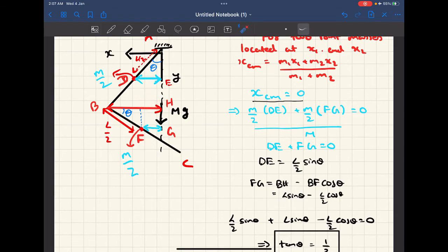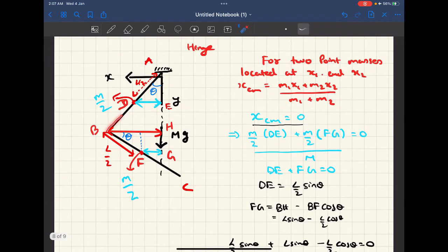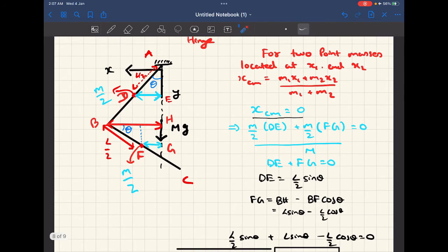So now BH is pretty easy to find. If you look at this triangle ABH, it's basically gonna be L times sine theta - that's what BH is gonna be. So BH is L sine theta. Now next is the horizontal component of BF, which is BF cos theta.